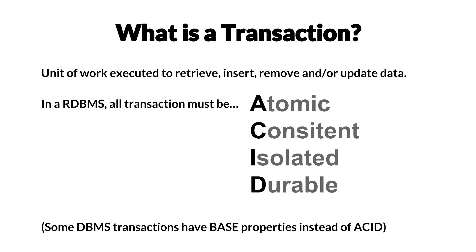We can rely on the fact that all transactions in a relational database management system will be atomic, they will be consistent, they will be isolated, and they will be durable — or ACID for short. It's worth mentioning that while all relational database management systems have these guarantees, not all database management systems do. Some have BASE properties instead of ACID, but we won't go into that in this video.